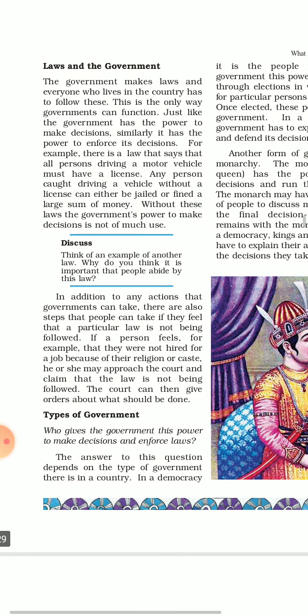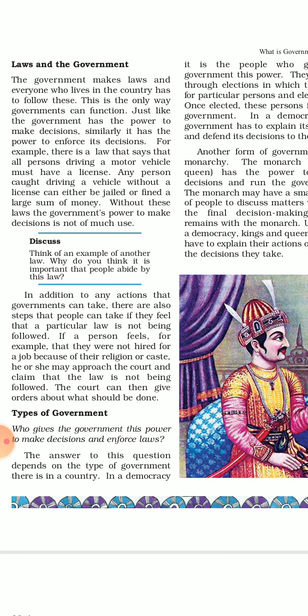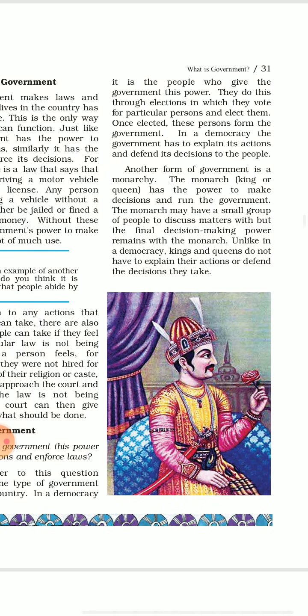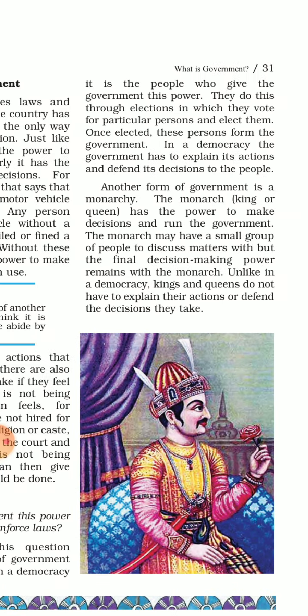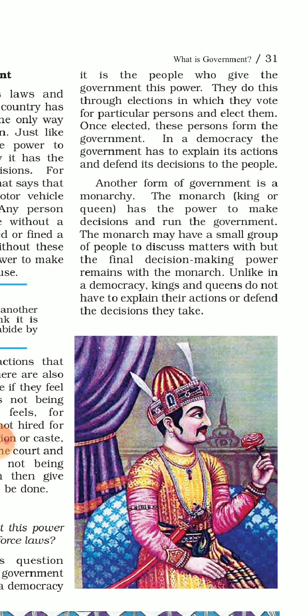Next comes the types of government. There are two main types of government: one is democracy and the other is monarchy. In a democracy, people have the power to elect their leaders. Democracy is a rule by the people, and so in a fair democratic government, individuals have a privilege to pick their leaders as their representative. Examples of democratic countries are India and USA.